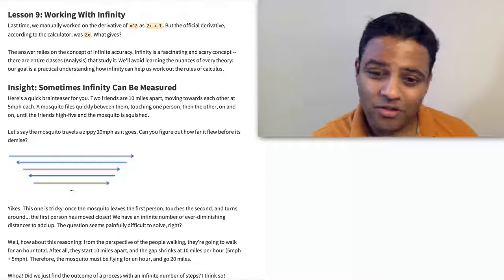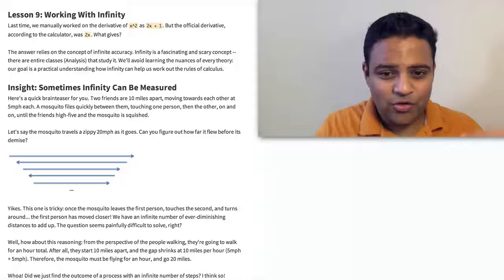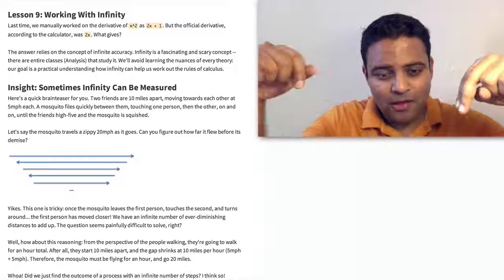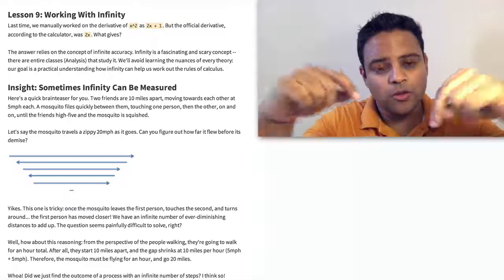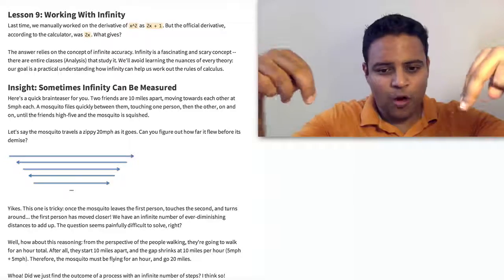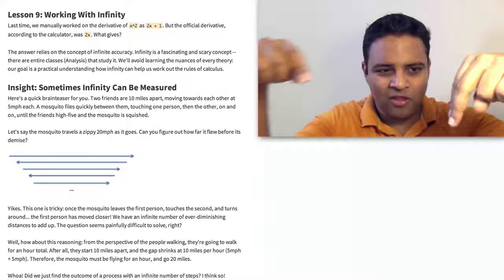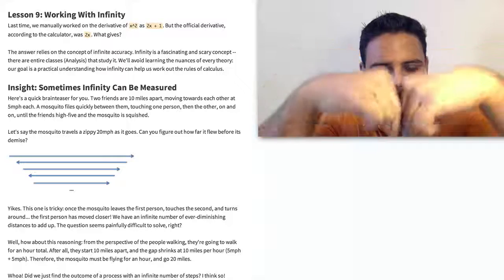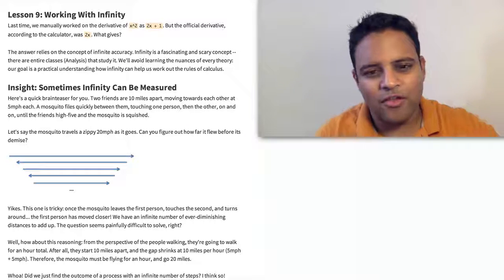So let's just start off with a quick example. Imagine that you have two friends who are walking towards each other and there's a fly going in between them. So the friends are walking, the fly is touching one person, then the next, gets closer and closer until the friends high-five and the fly is squished.